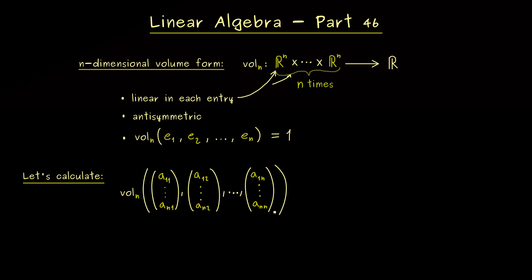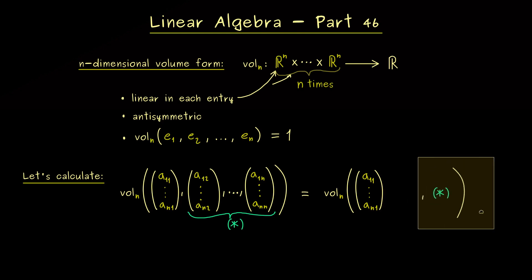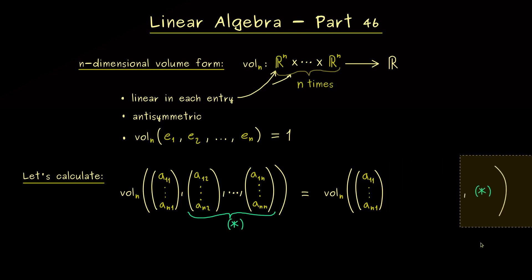And now for the start, I want to use the linearity in the first entry, hence let's ignore the other entries for the moment. This means we will simply shorten these vectors with star. So you see this makes the whole formula here much more compact. Okay, and now let's rewrite the first vector here as a linear combination.